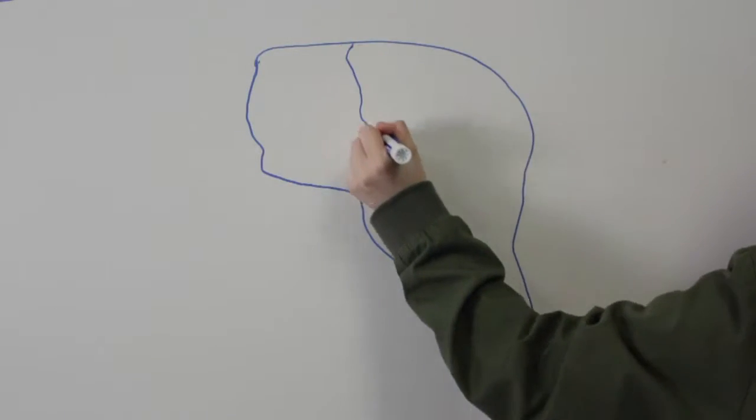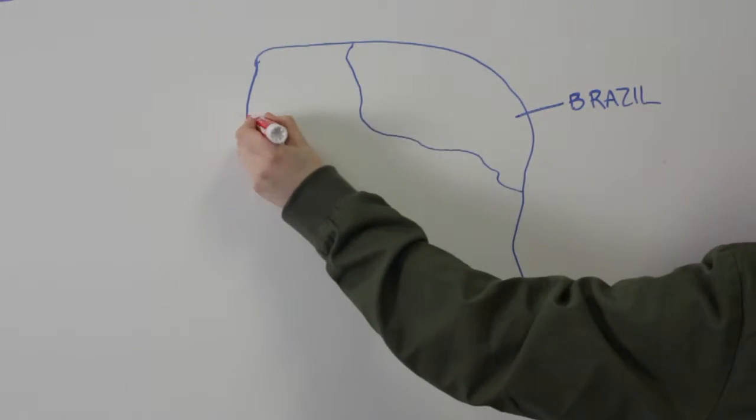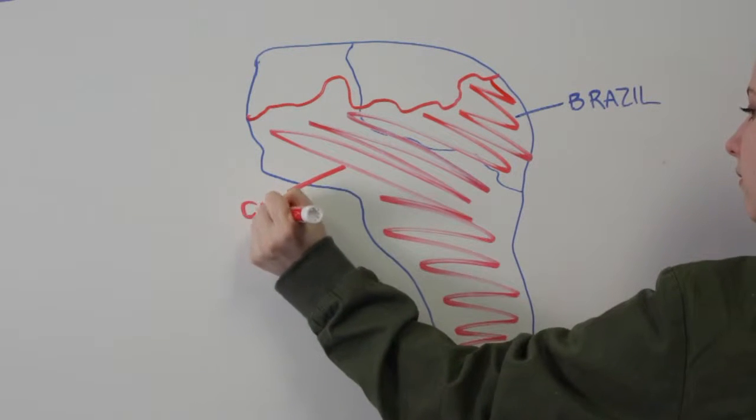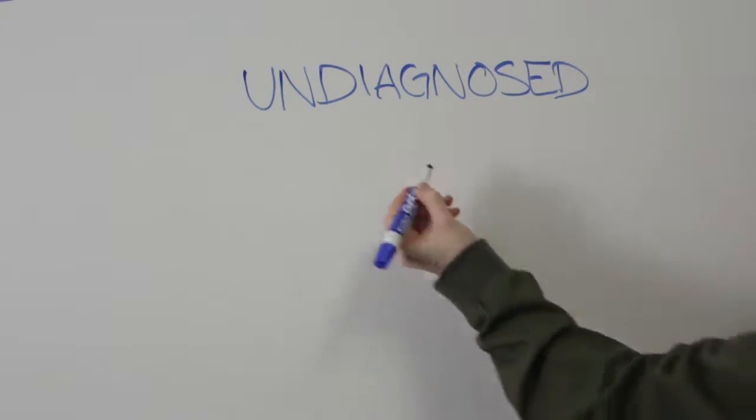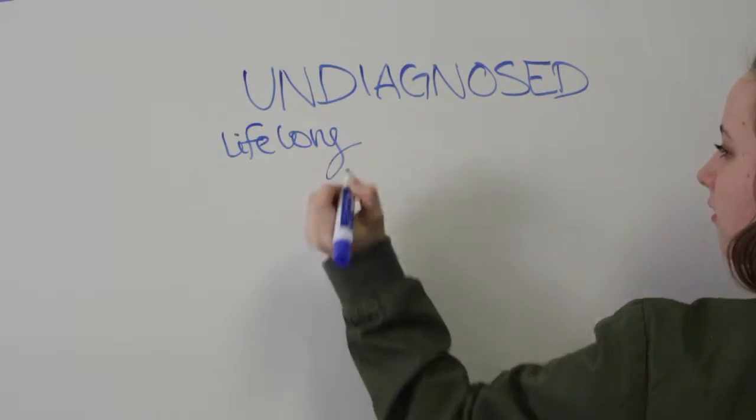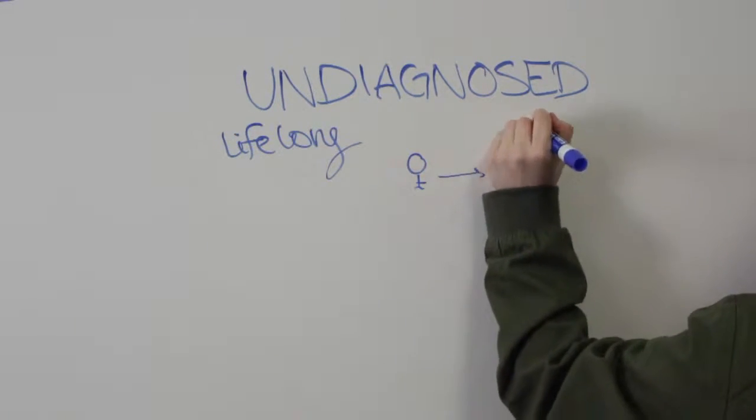Chagas disease is a neglected tropical disease that is endemic in Brazil and the majority of South and Central America. Over 8 million people in the endemic region are infected, while many others remain undiagnosed.